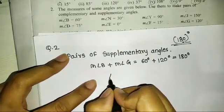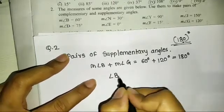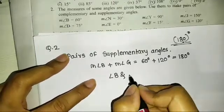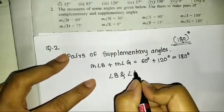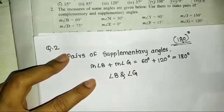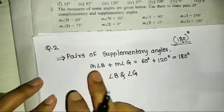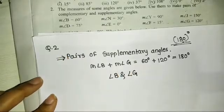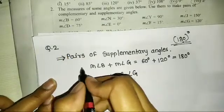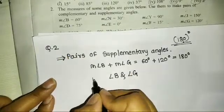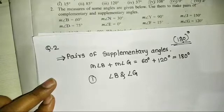The addition of angle B and angle G is 180 degrees. This is a supplementary angle pair. This is the first pair.